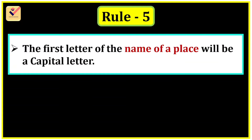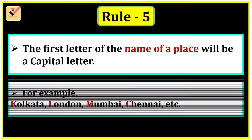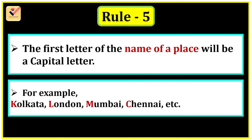Rule 5: The first letter of the name of a place will be a capital letter. For example: Kolkata, London, Mumbai, Chennai, etc. These are the names of places. In Kolkata, K is capital. In London, L is capital. In Mumbai, M is capital. In Chennai, the first letter C is capital.